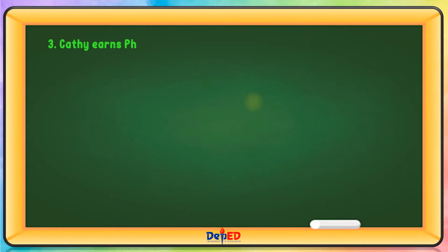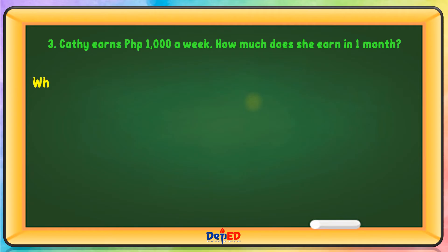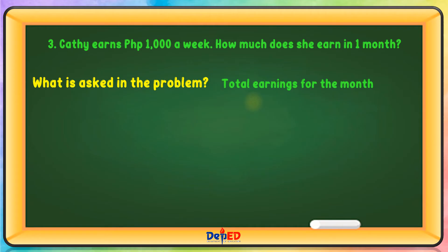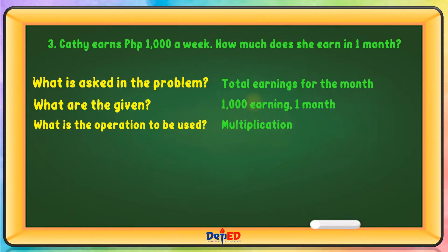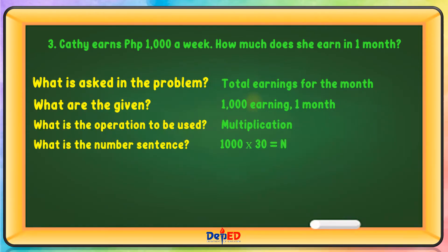What is the number of money? Total earnings for the month. What are the given? 1,000 earnings, 1 month. What is the operation to be used? Multiplication. What is the number sentence? 1,000 times 30 equals N. Let us solve: 1,000 times 30 equals 30,000.